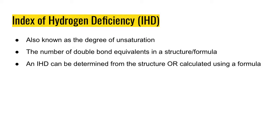In this video, we're going to go over what the Index of Hydrogen Deficiency, or IHD, is. The Index of Hydrogen Deficiency is really just a measure of the number of double bond equivalents in a structure or a chemical formula. It's also known as the degree of unsaturation, because it's a measure of how many double bond equivalents there is within that structure or within that formula.